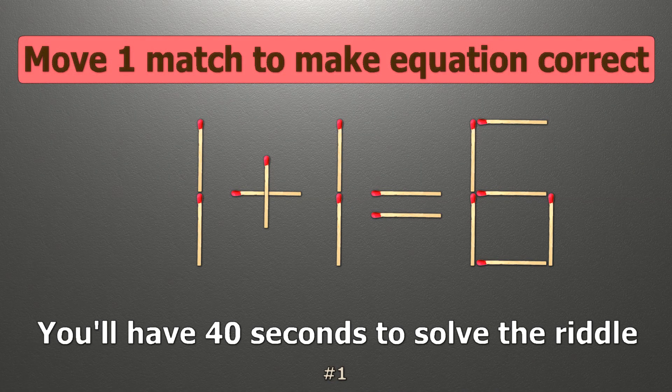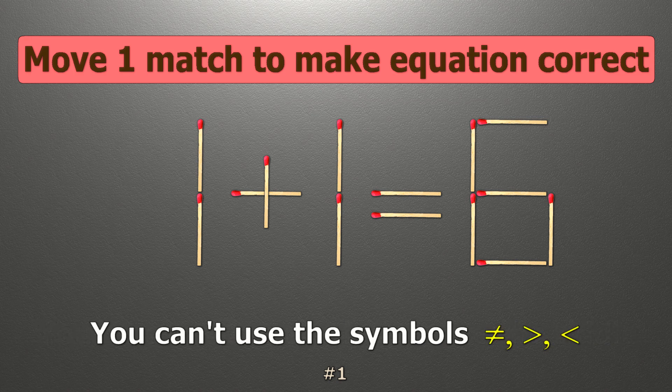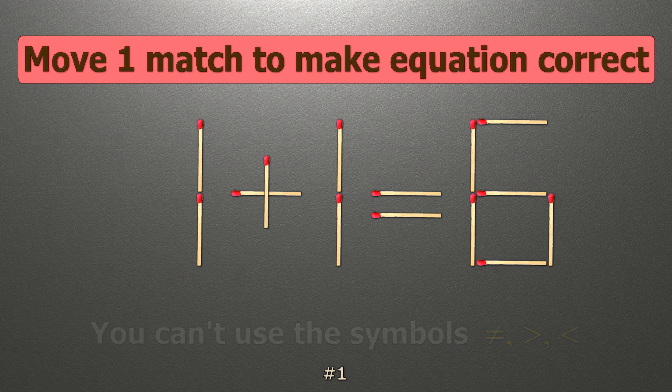We have the equality 1 plus 1 equals 6. Our equality is wrong. We need to move one match to make our equality correct.